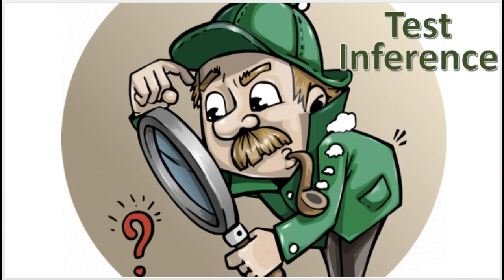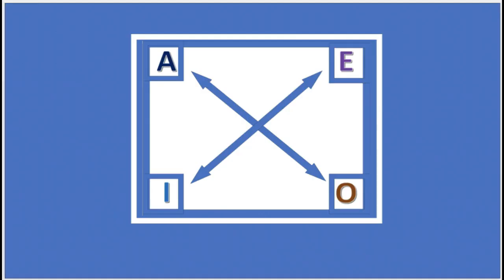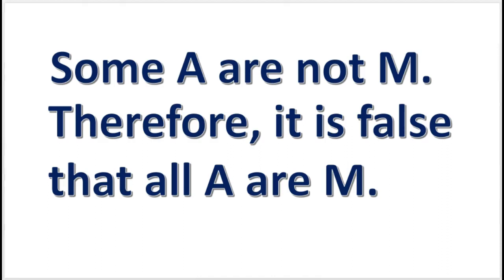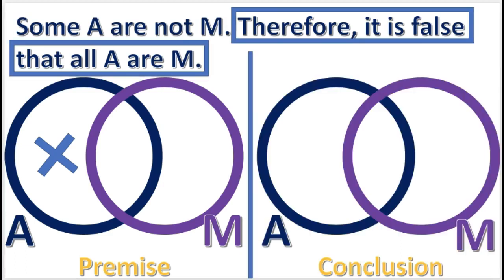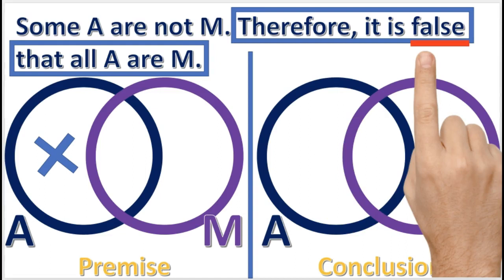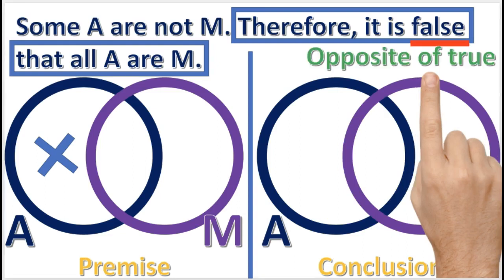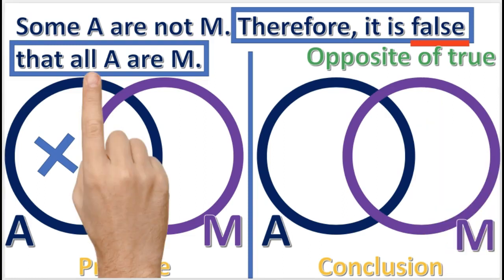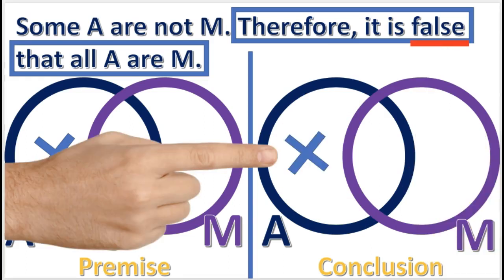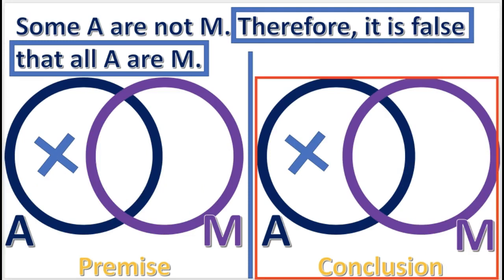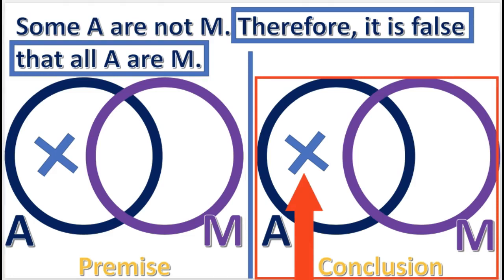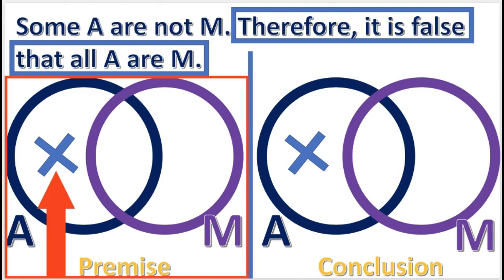Now you know how to test an inference using the modern square of opposition. But now let's see how to use the Venn diagram to test an inference. Take a look at this inference. First, we draw a diagram for the premise. Next, we draw a diagram for the conclusion. Since the conclusion asserts that an A statement is false, we do the opposite of what we would do if the statement were true. If 'all A or M' were true, we would shade the left-hand part of the A circle. But since the statement is false, we place an X in this area. Now we look at the diagrams to see if the information in the conclusion diagram is contained in the premise diagram. Since there's an X in the left-hand part of the premise diagram, the inference is valid.